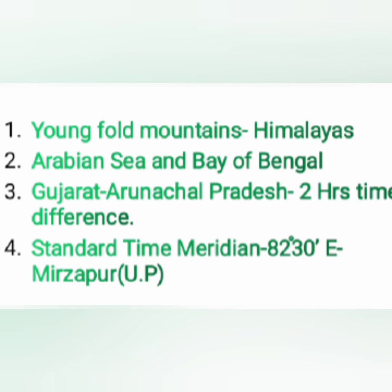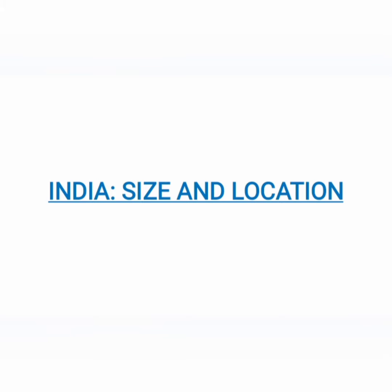The fourth point is that we consider 82.5 degrees east as the standard time meridian. We calculate time on the basis of 82.5 degrees east meridian, so it is called our standard time meridian, and it passes through Mirzapur, Uttar Pradesh.